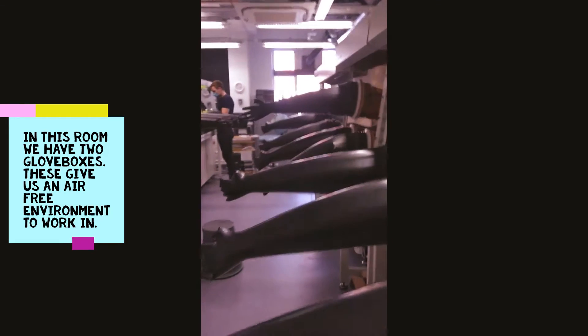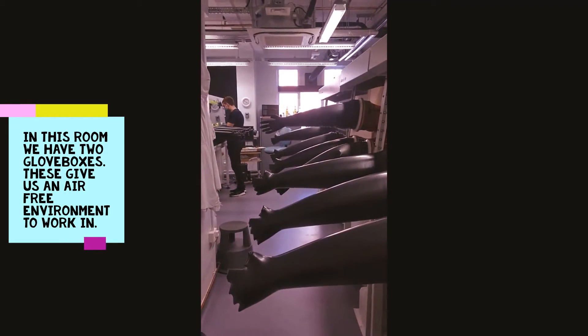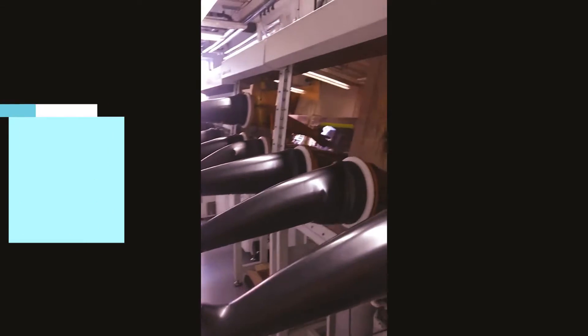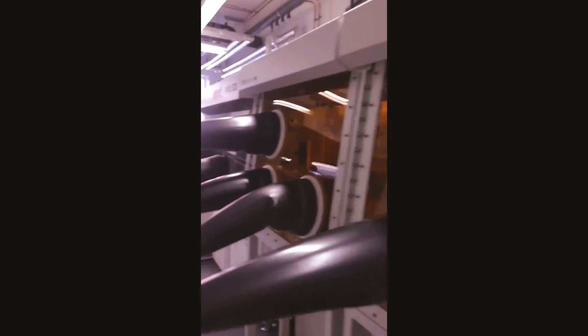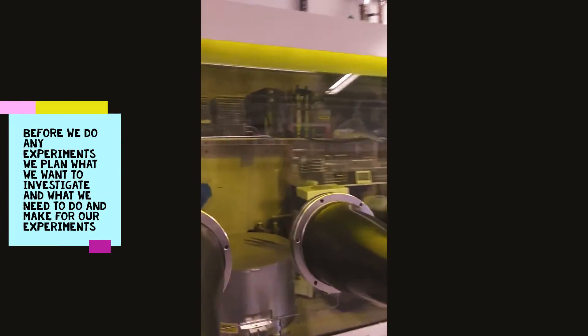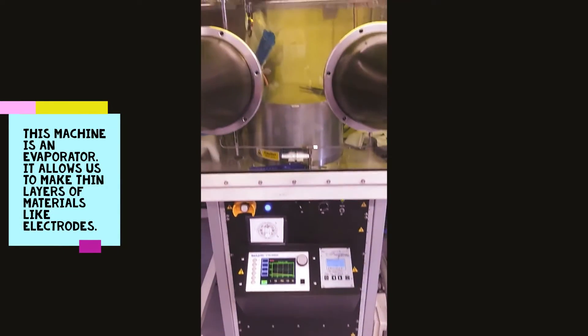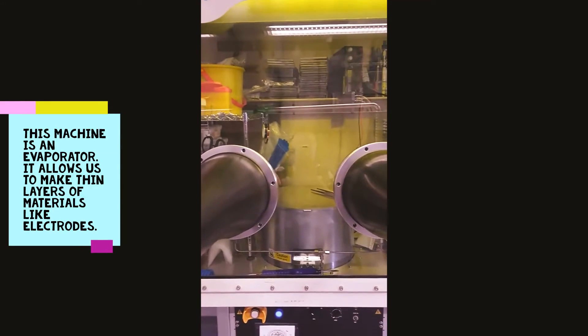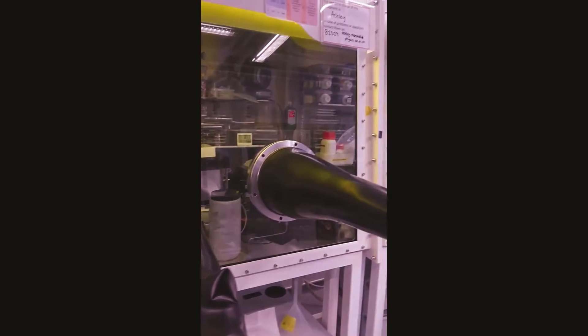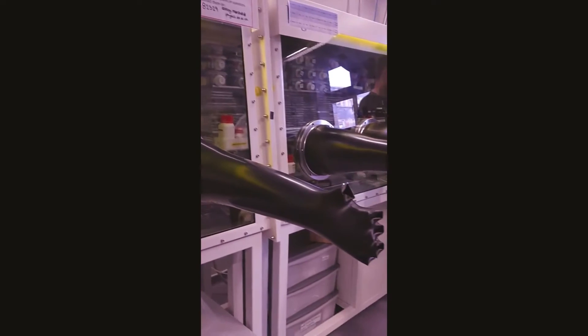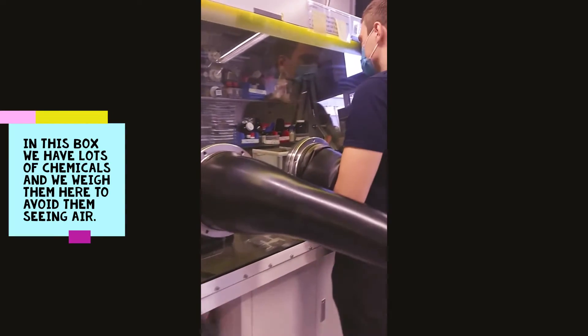As you can see, there are tons of gloves and these things called glove boxes. Basically what they are is these huge boxes filled with nitrogen and they just provide us with an environment that's free of air and moisture. We use these because a lot of our materials are quite sensitive to the environment and this is a good way to make sure that they don't break down.